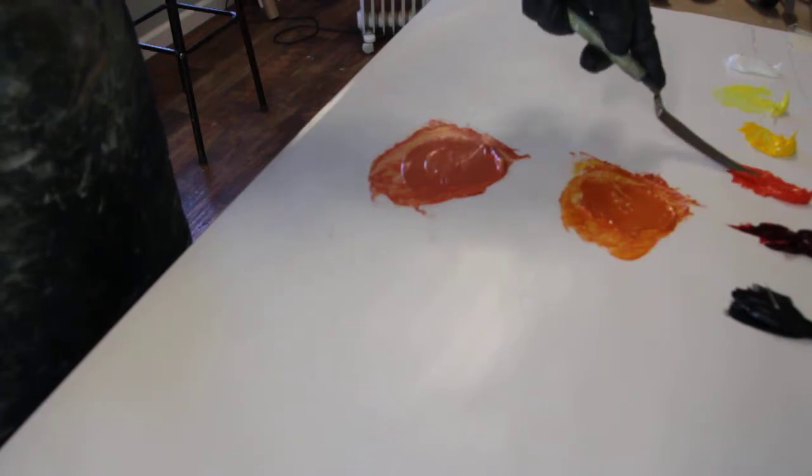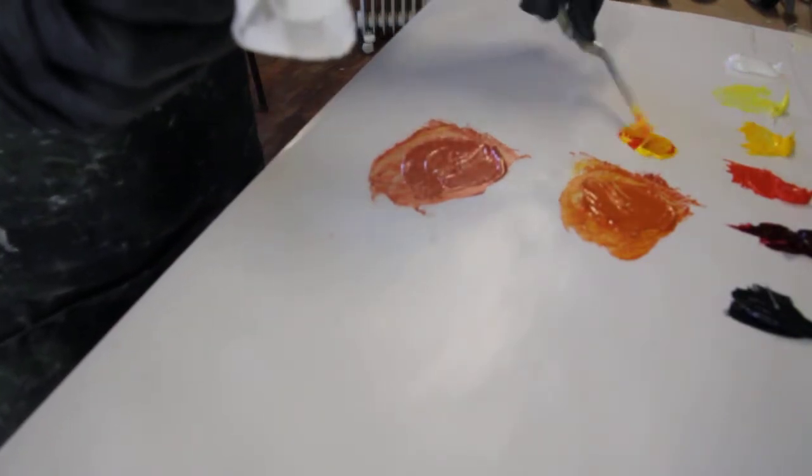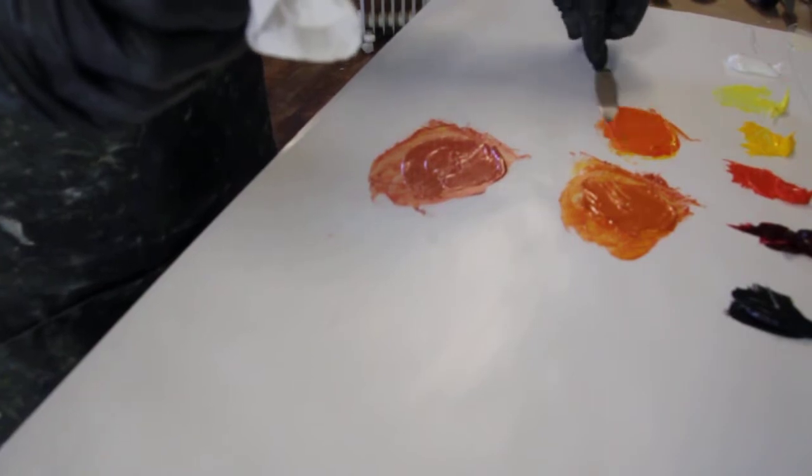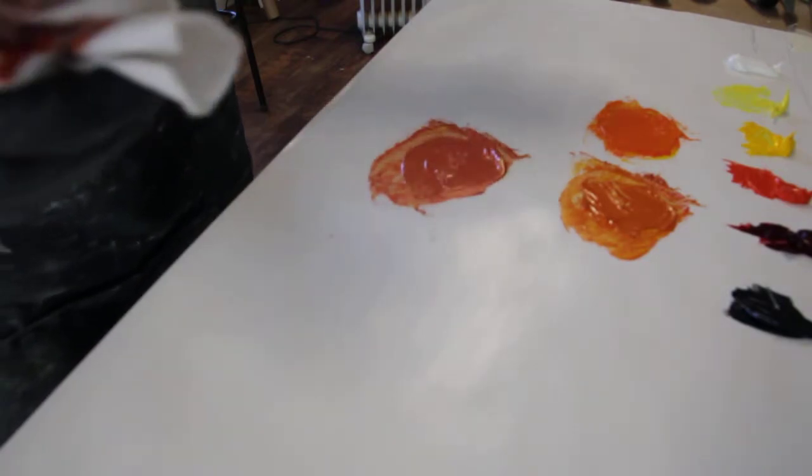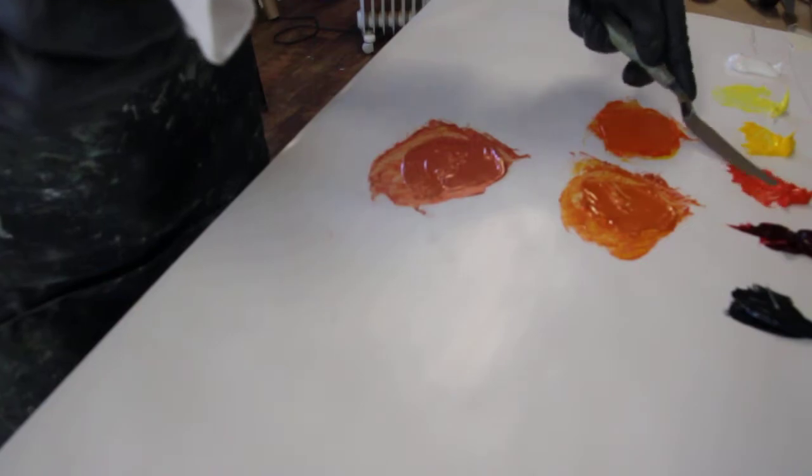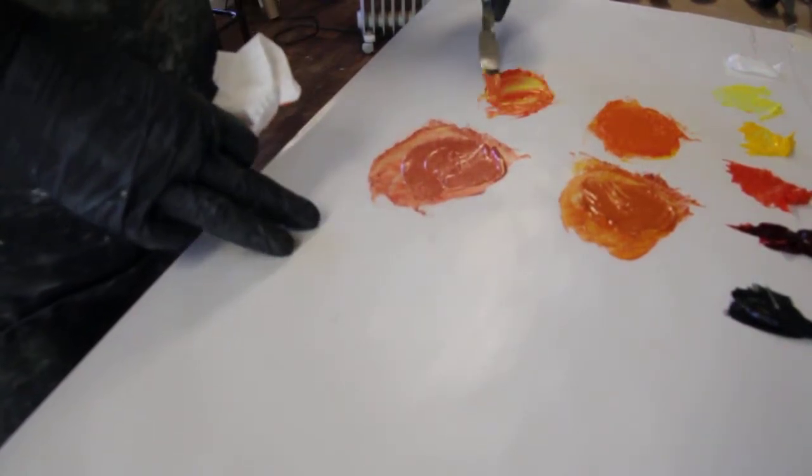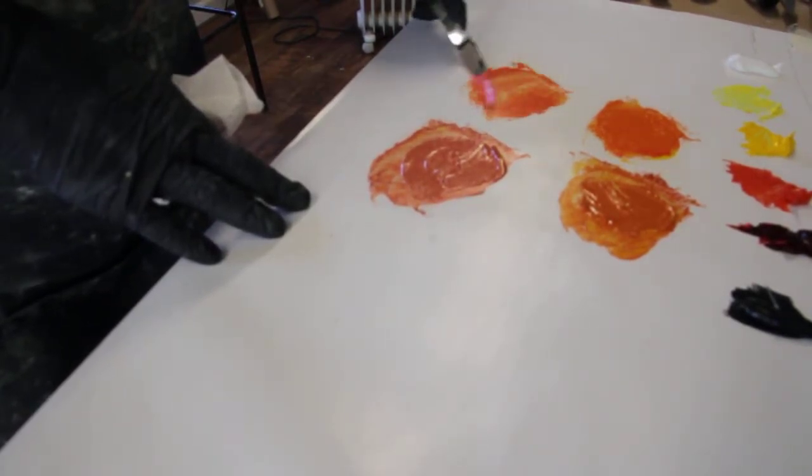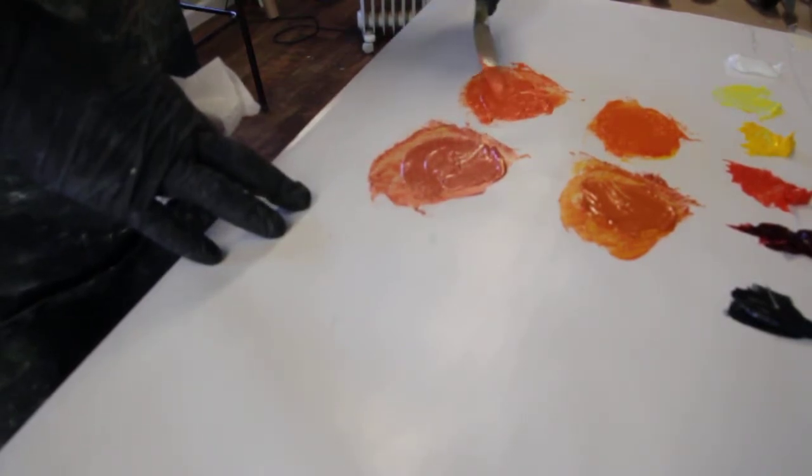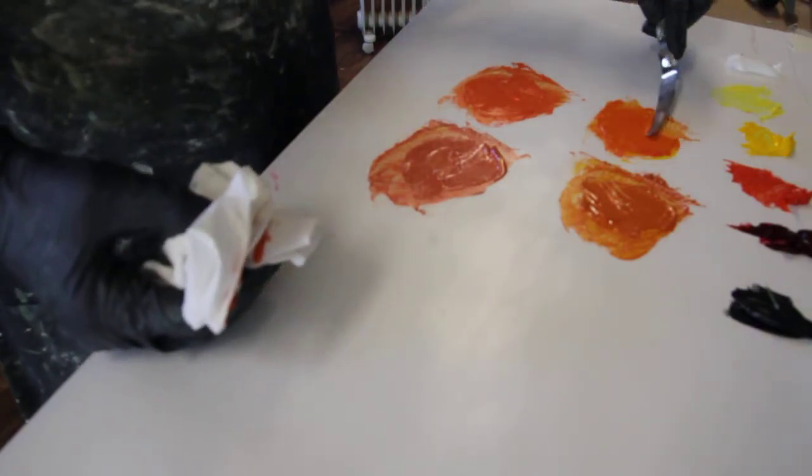Now I'm gonna take my warm red, mix it with the warm yellow. Much brighter, almost fluorescent. And then I'll take this cad red light with the cooler yellow. You may not be able to see the subtle varieties on this video but I will try to show that later. Quite a bit cooler than this one.